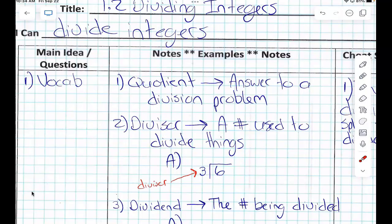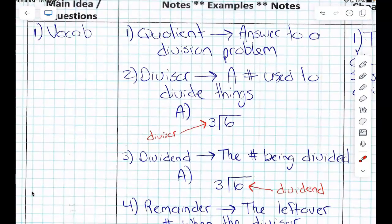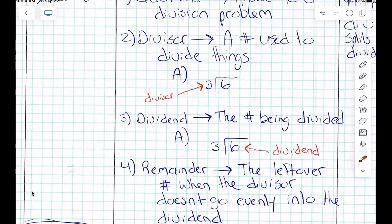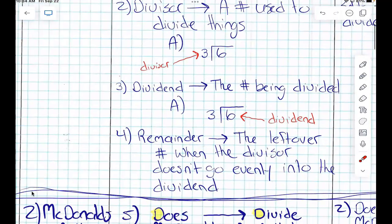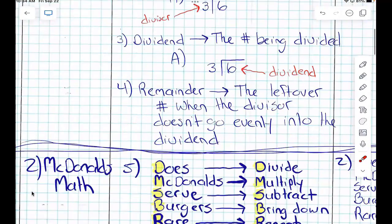So quotient. A quotient is the answer to what kind of problem? A division problem. It's the answer to a division problem, and when we have division problems, we have something that does the dividing. What is that number, or what is that thing called that does the dividing? Divisor. Divisor, and then something is being divided usually, or always. The thing that is being divided is called the? Dividend. The dividend, and sometimes when we divide, we have a leftover number. That leftover number is called a? Remainder. Remainder.